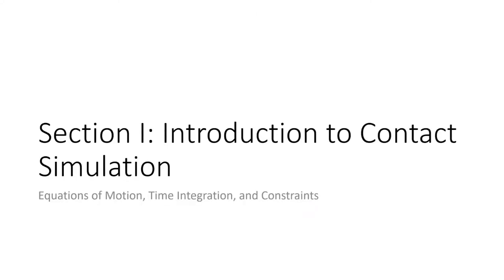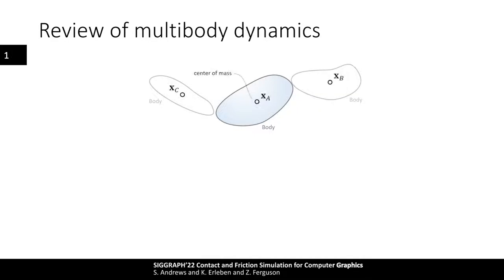Let's dive into some essentials of multibody dynamics and see how it may be used as part of a discrete time integration scheme to simulate objects with contact. Then we'll introduce constraints since they are fundamental components for many of the contact models we present. A multibody simulation has multiple bodies moving around in space. These bodies have a position and a mass, but also kinematic and dynamic properties such as acceleration and forces. From a classical mechanics perspective, the movement is governed by equations that determine the relationship between the acceleration of the bodies and the forces acting on them.